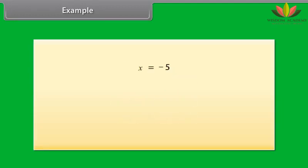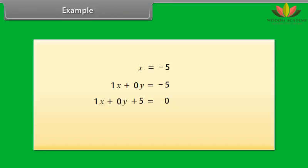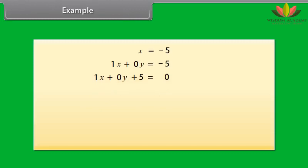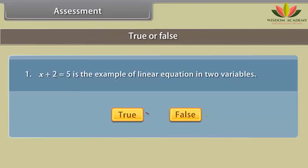Now look at this equation. It can be written as 1X plus 0Y equals minus 5, or 1X plus 0Y plus 5 equals 0. Similarly, the equation Y equals 2 can be written as 0X plus 1Y equals 2, or 0X plus 1Y minus 2 equals 0.